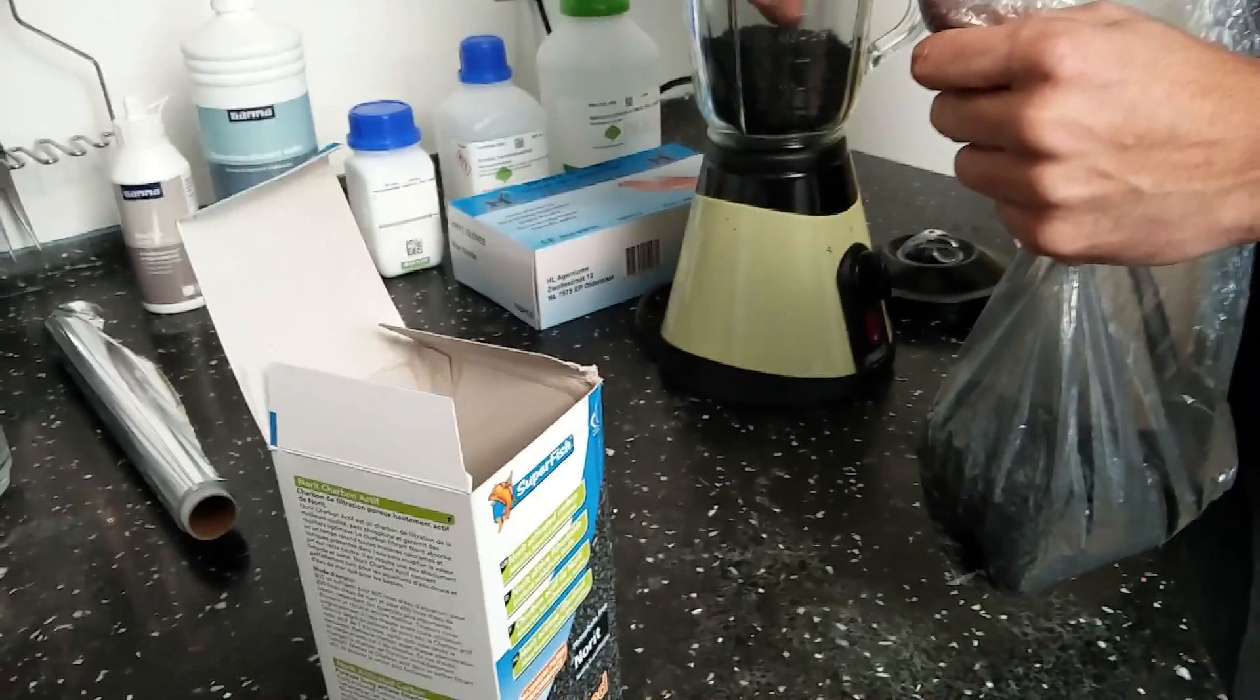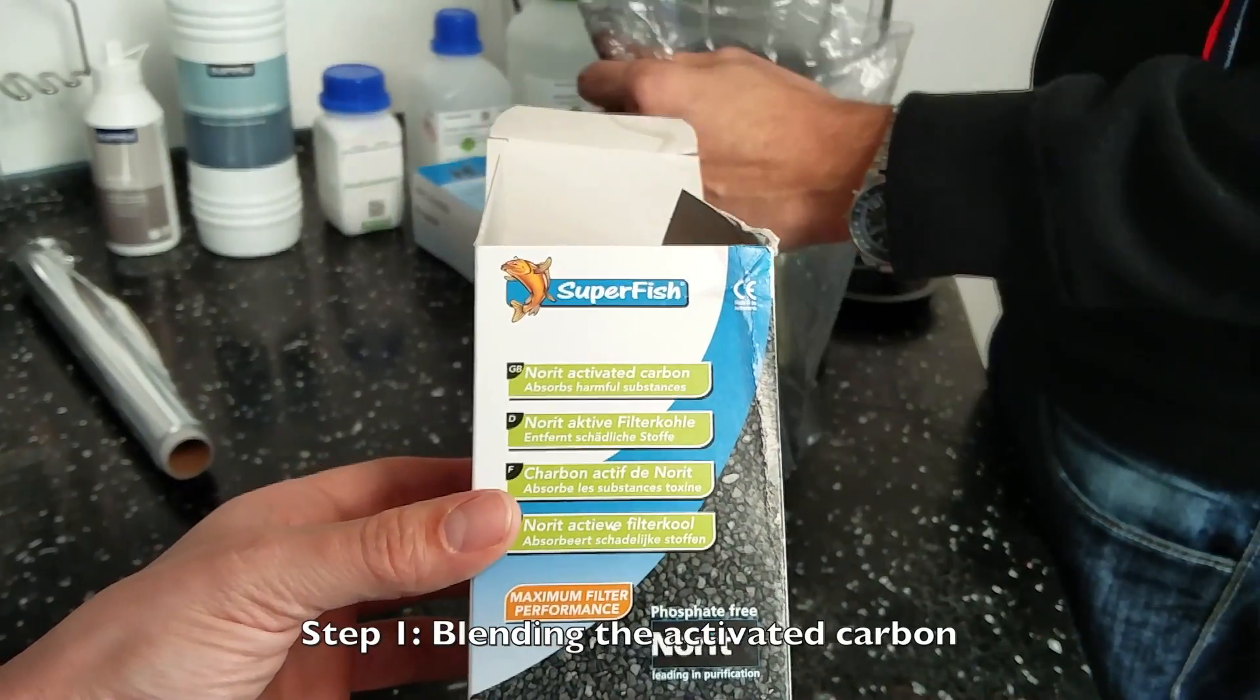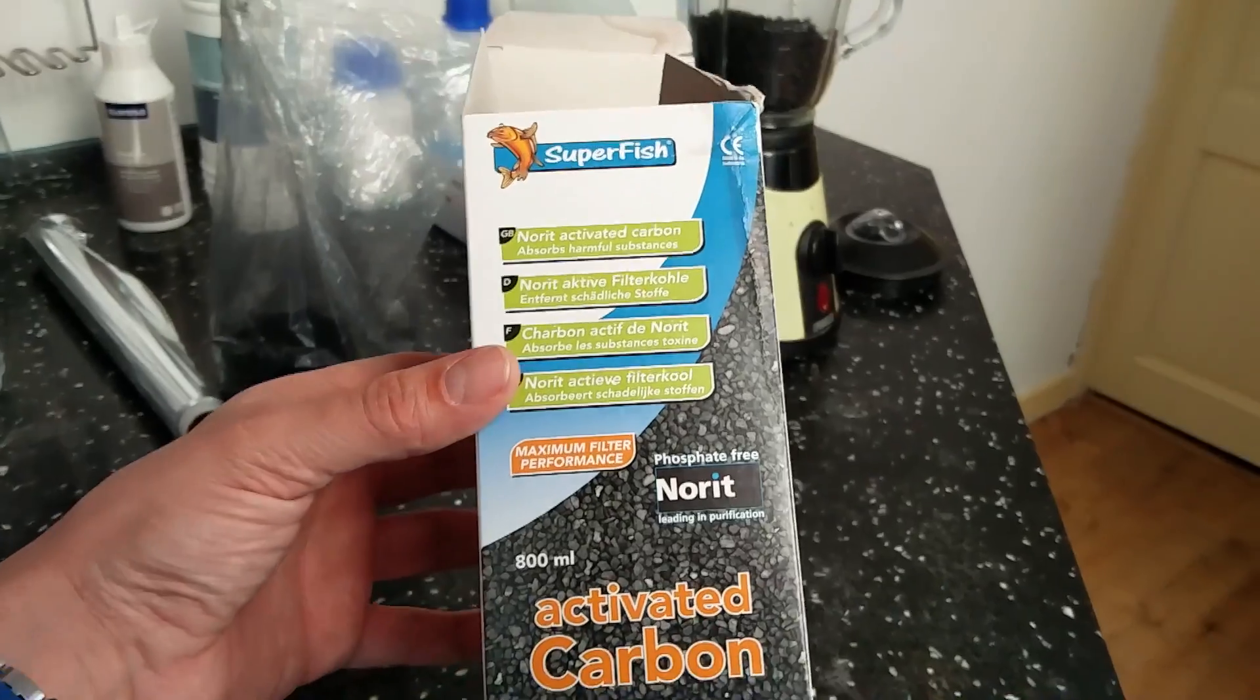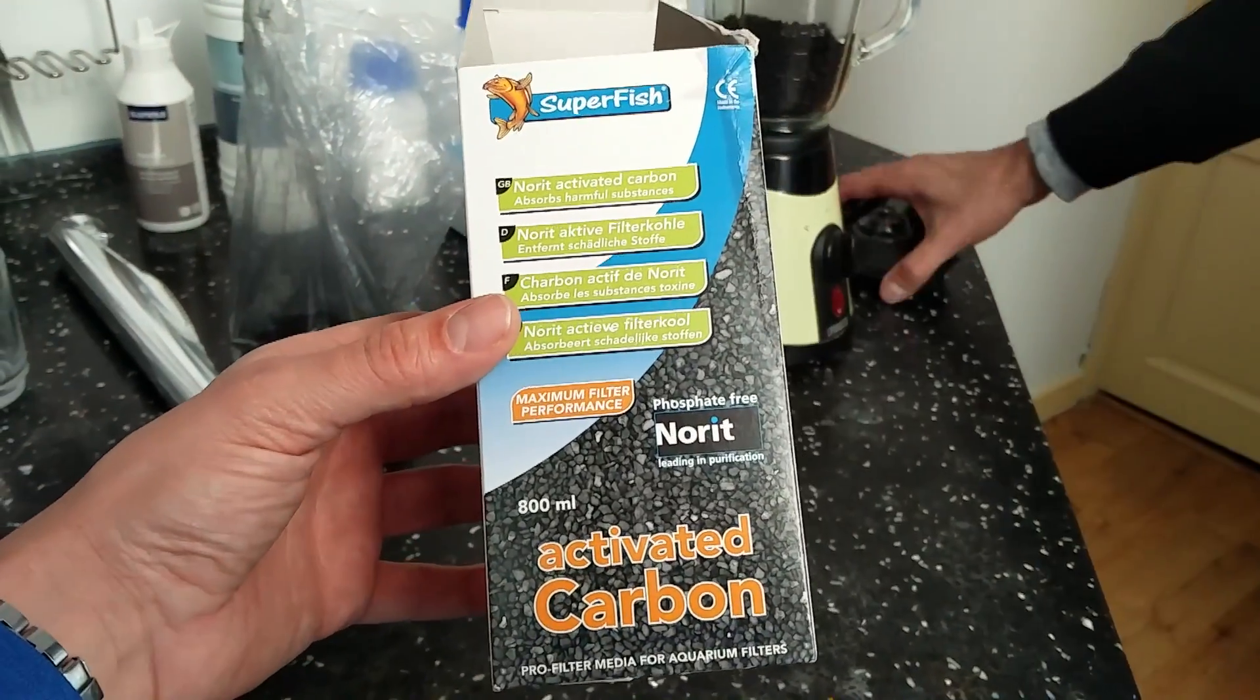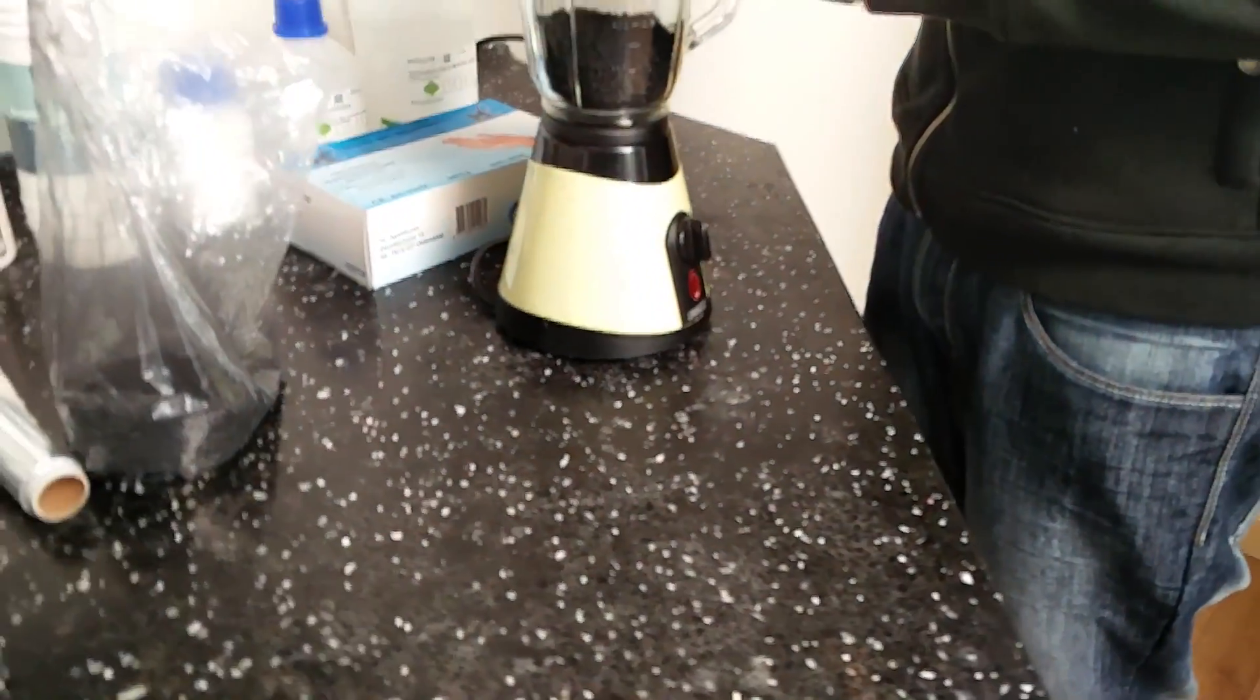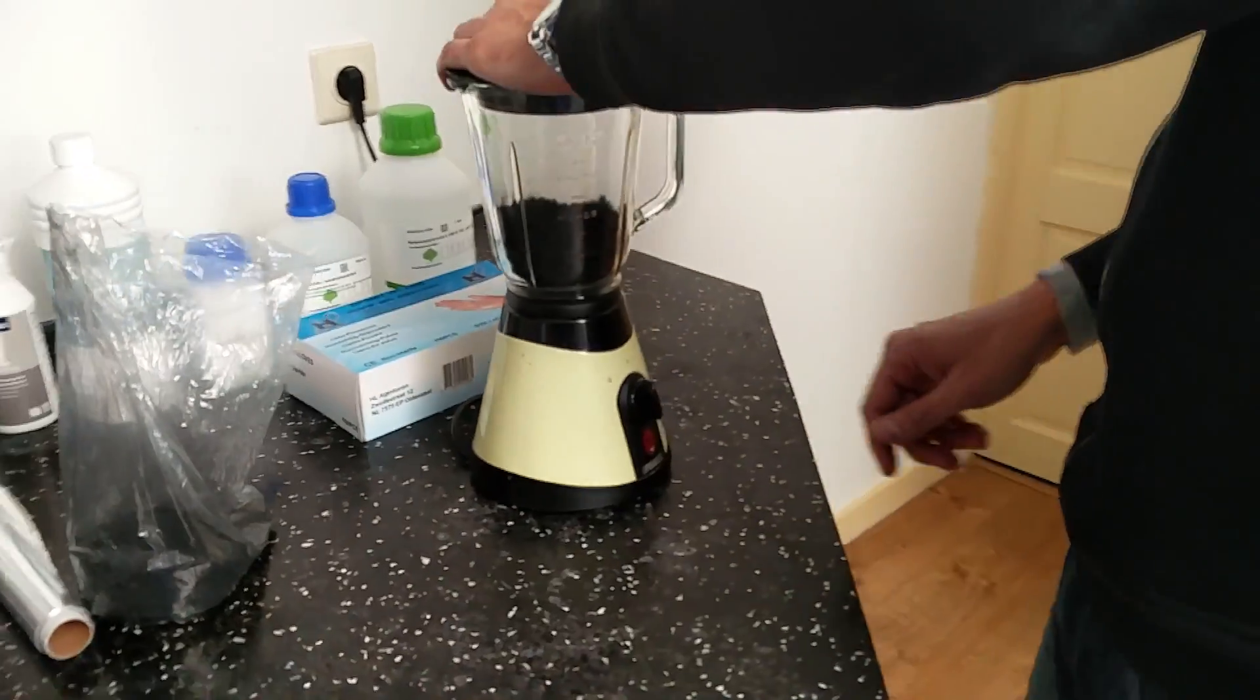Activated carbon, norit activated carbon, about five euros. Fish cleaning filter stuff. All right, there we go.